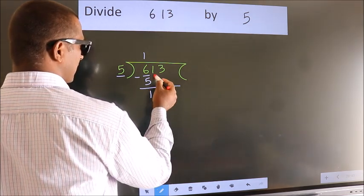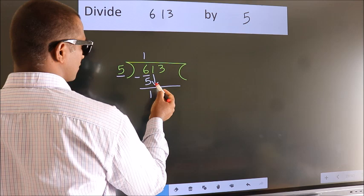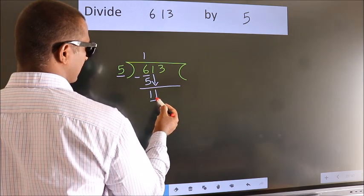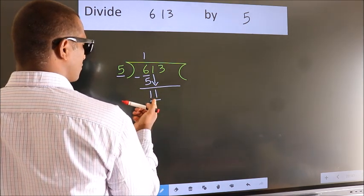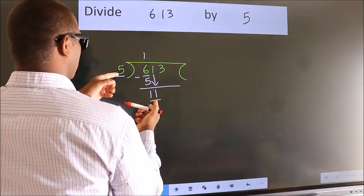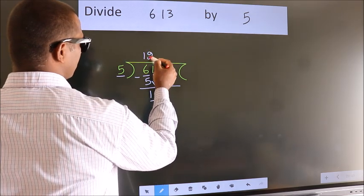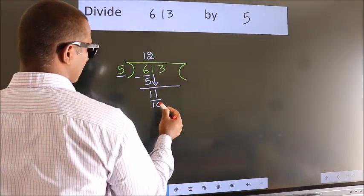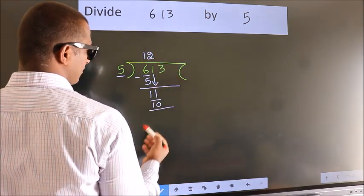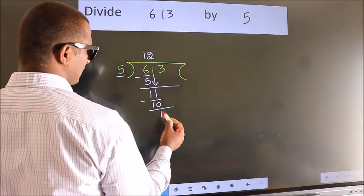After this, bring down the beside number. So bring down 1, making 11. A number close to 11 in the 5 table is 2 times 5 equals 10. Now we subtract. We get 1.